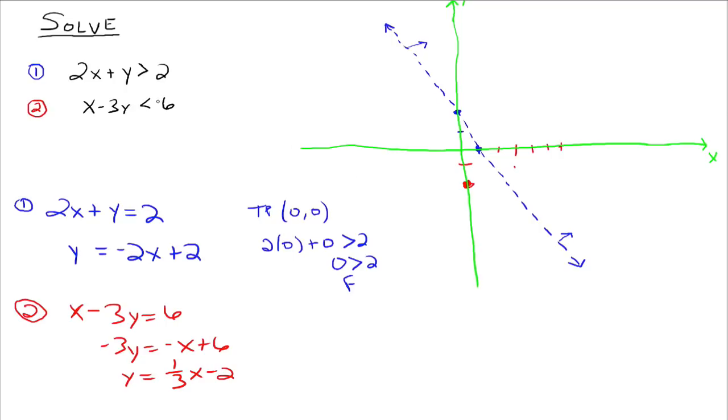So those are the points that lie on that line, and now we ask ourselves, is this line solid or dashed? Well, again, since it's strictly less than, it is dashed.